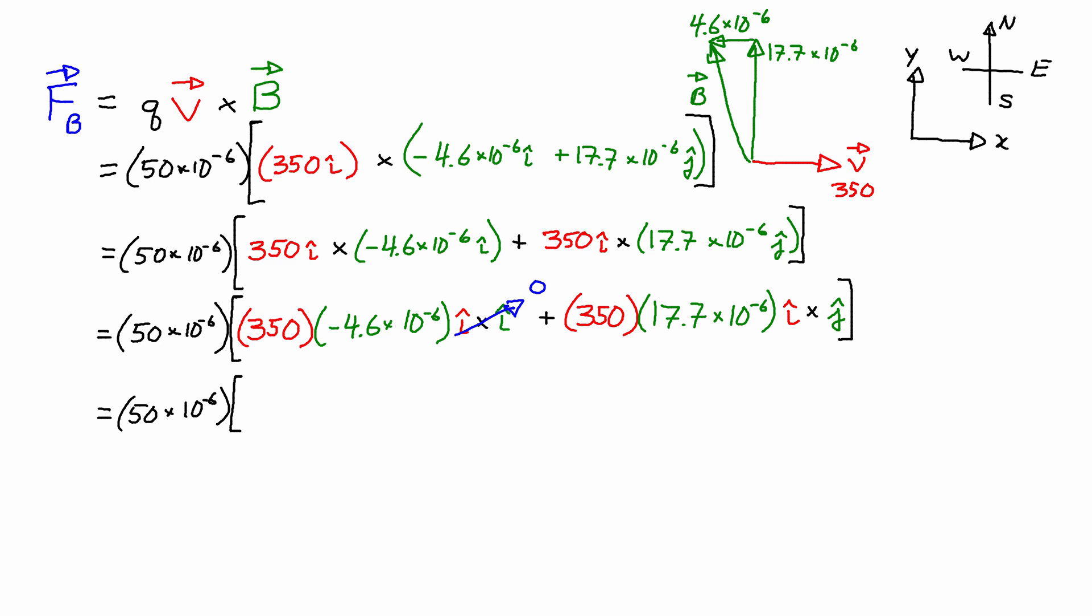So this whole part in the beginning, 350 times negative 4.6 times 10 to the negative 6 gets multiplied by 0. And then for the second part, the 350 times 17.7 times 10 to the negative 6 ends up being 6.195 times 10 to the negative 3. And i-hat cross j-hat gives k-hat.